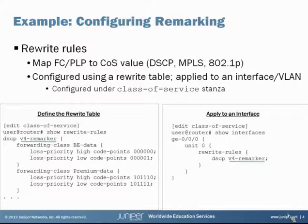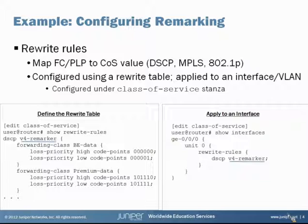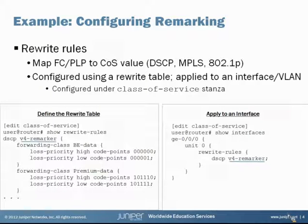For forwarding class be-data traffic with a loss priority of high, the code points assigned on egress are all zeros. Similarly, for forwarding class be-data with a loss priority of low, we assign code points 000001. You simply move down through the forwarding classes and PLP values, assigning the appropriate code points for all the traffic types you want to tag from a CoS perspective as it egresses. Then on the right side, still under the class-of-service section, we apply our v4-remarker rewrite table to an egress interface - under GE 0/0/0 unit 0, rewrite-rules DSCP.